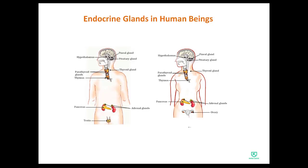The female structure is the same except the reproductive system is different. In the male reproductive system there are testes, while in the female reproductive system the reproductive organs are different.